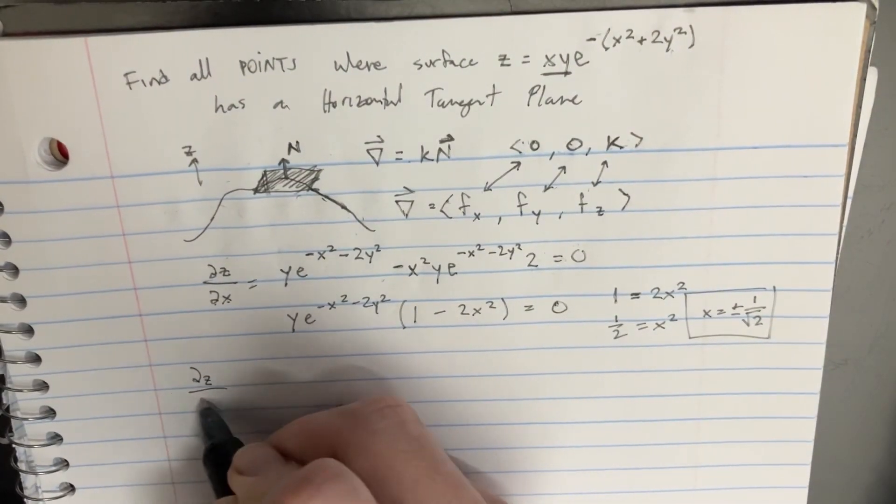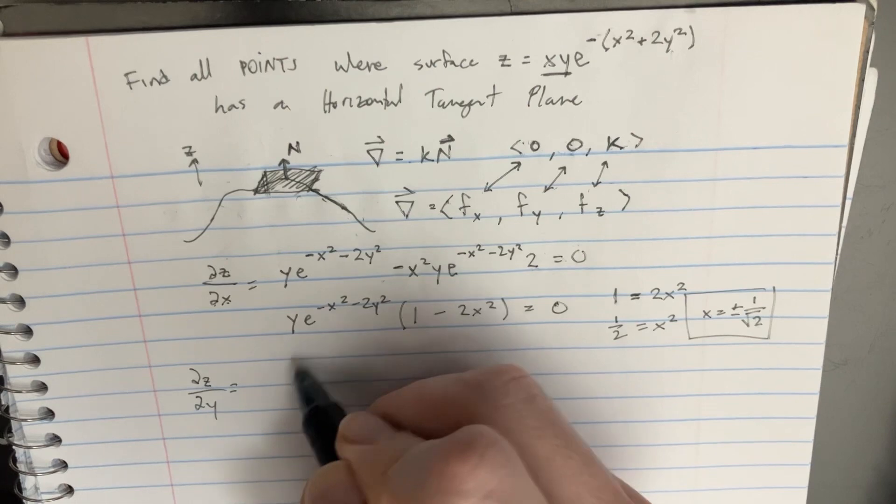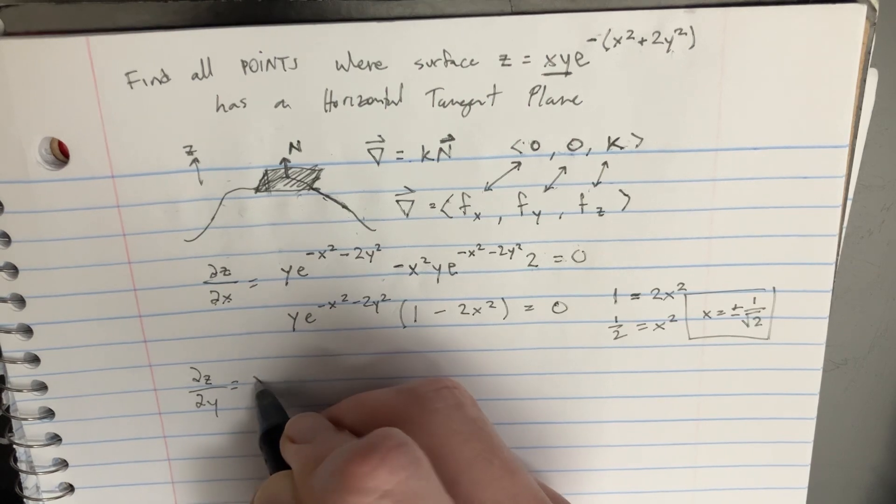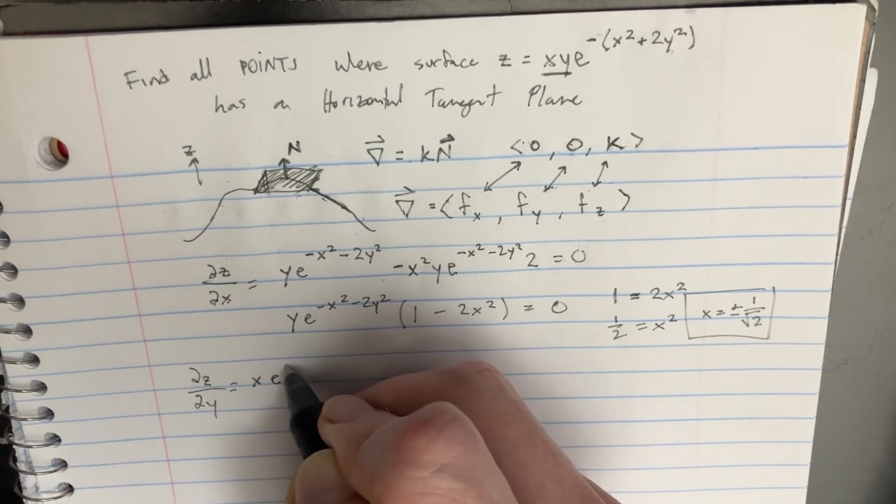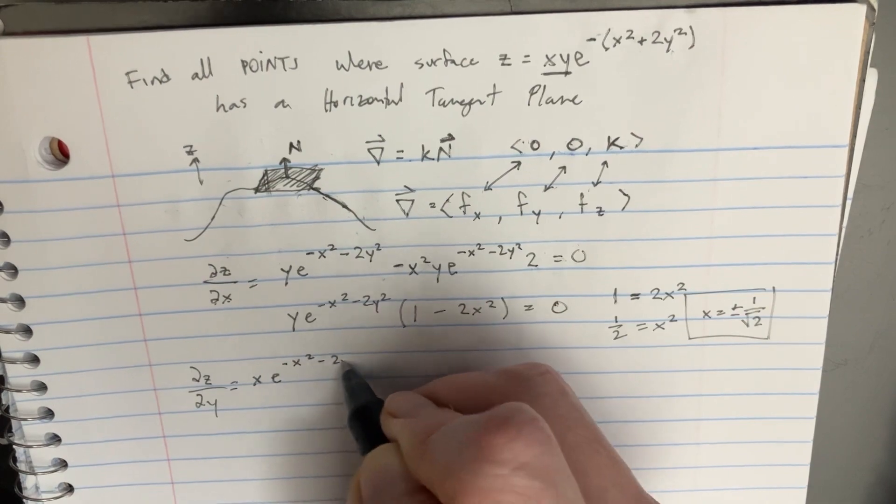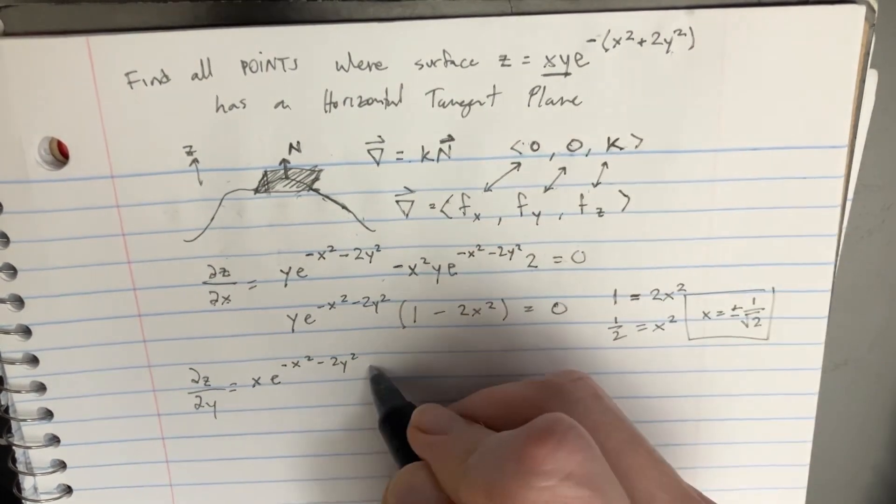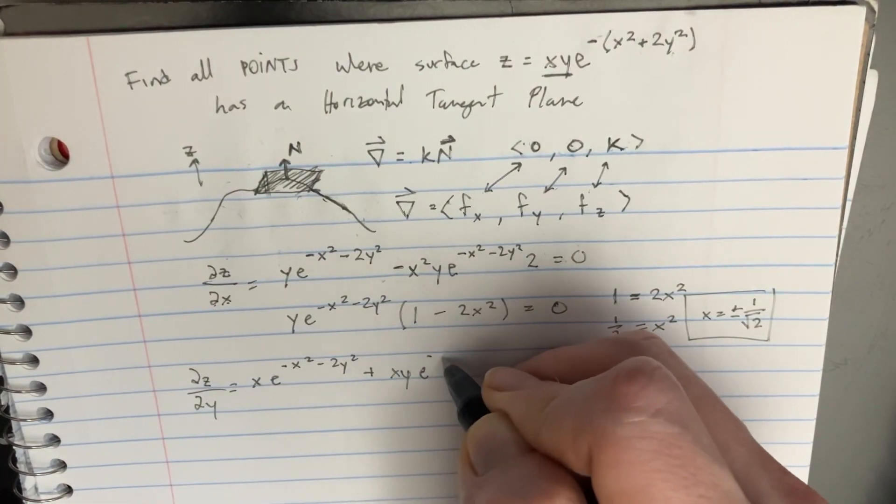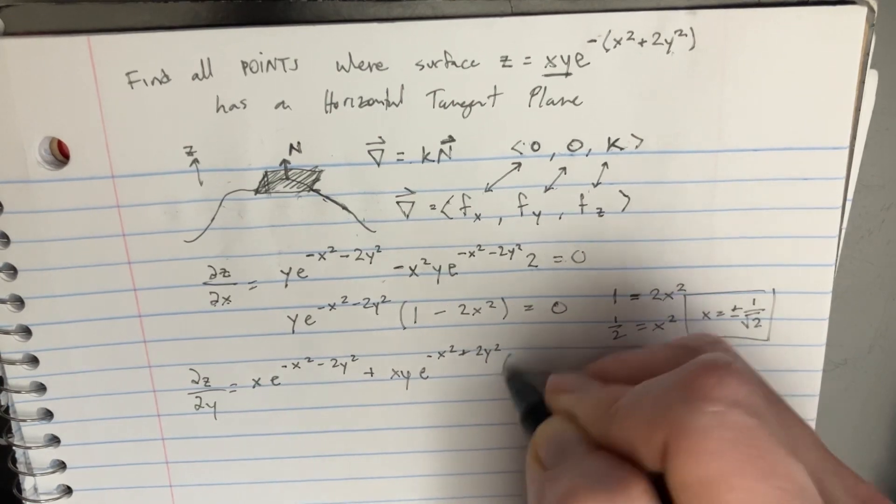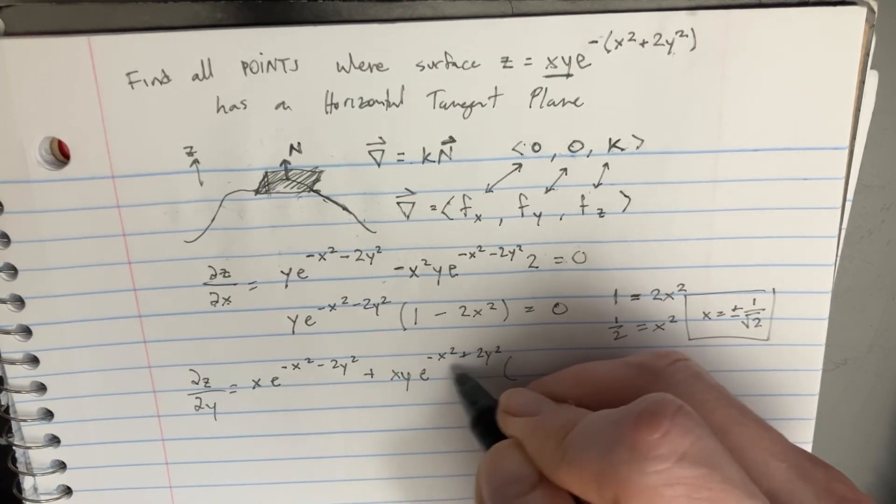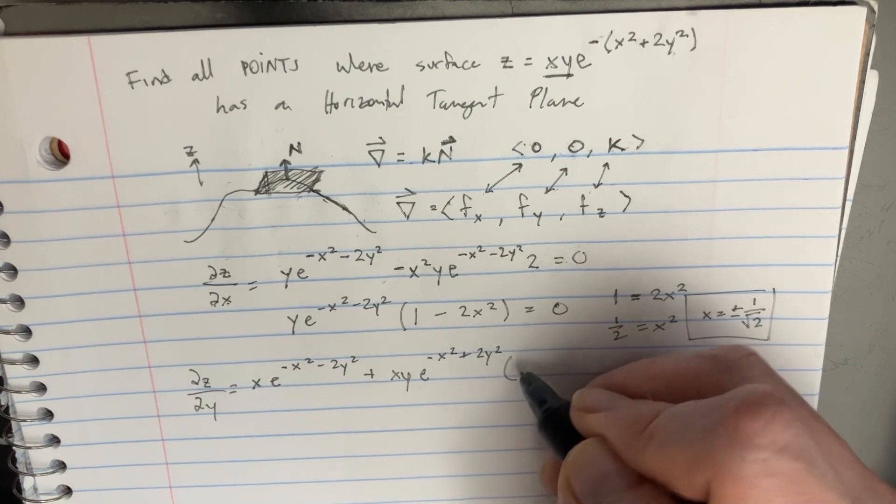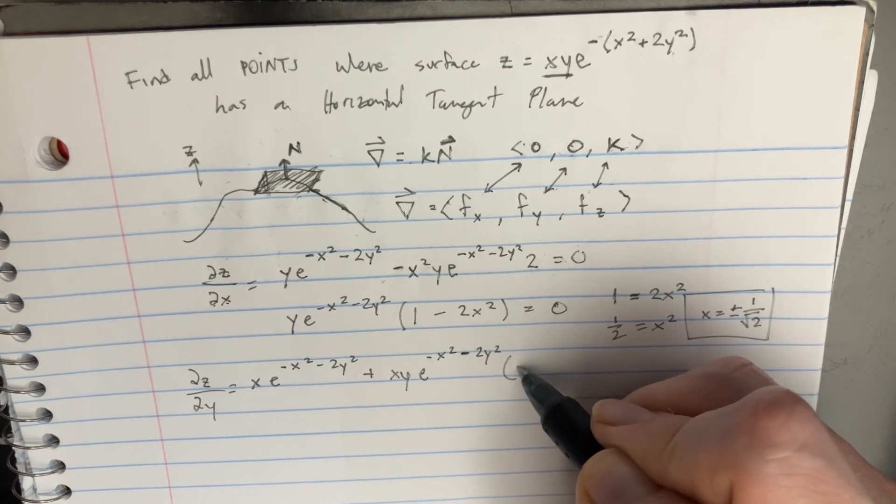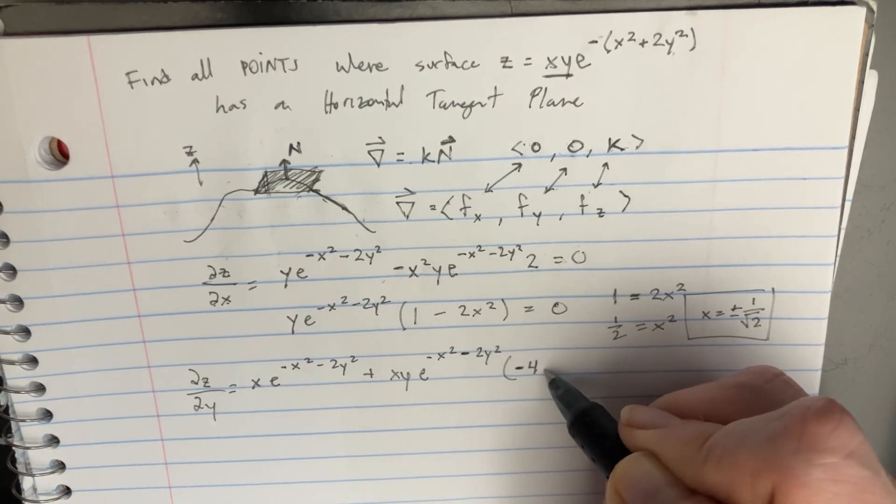Now we can also solve for y. So we'll go dz dy is going to be equal to very similar stuff. So we'll take the derivative on that side. It's going to be equal to just x. Then we go e, minus x squared, minus 2y squared. Here we're going to just do the plus. Leave that side that way. Take the derivative of this, negative x squared, plus 2y squared. Multiply that by the derivative of that, which is going to be... Well, this is supposed to be a minus right here, right? Okay, and then minus 4y.